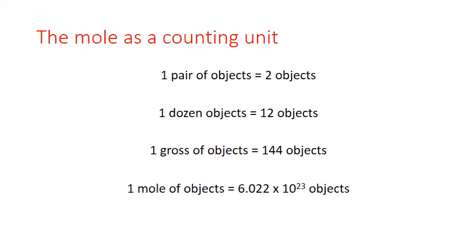For example, if I told you I had a dozen donuts, you would know that I had 12 donuts. If I tell you that I have a mole of donuts, it means that I have 6.022 times 10 to the 23rd donuts.